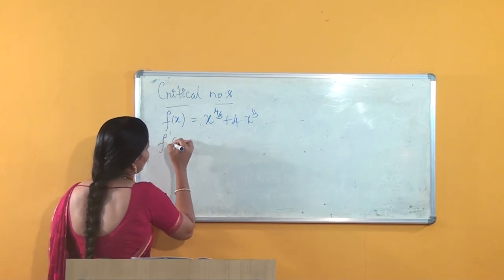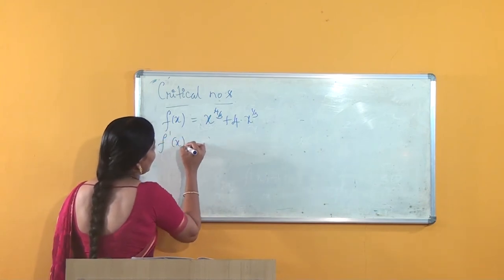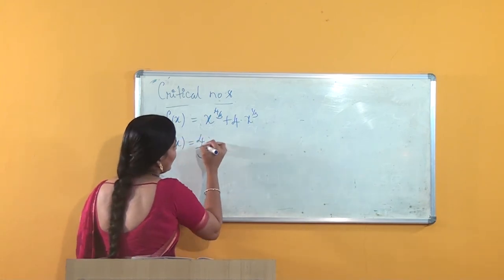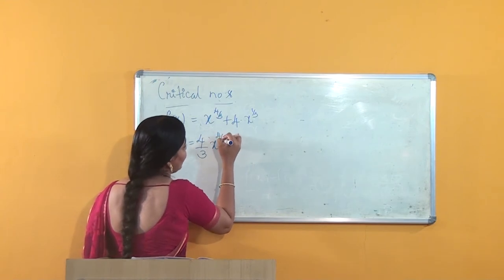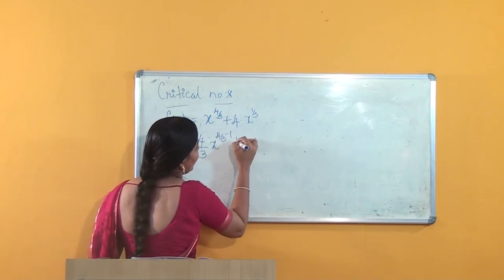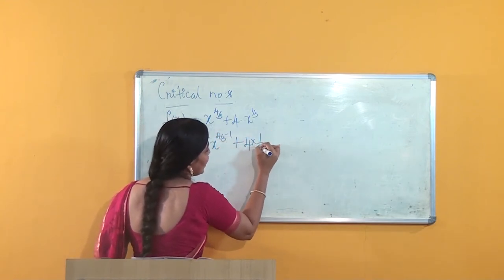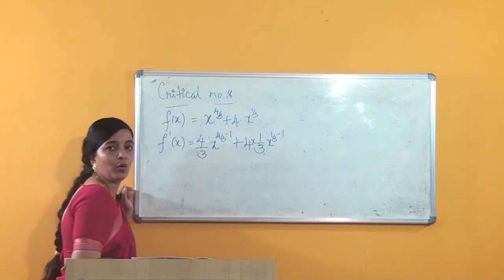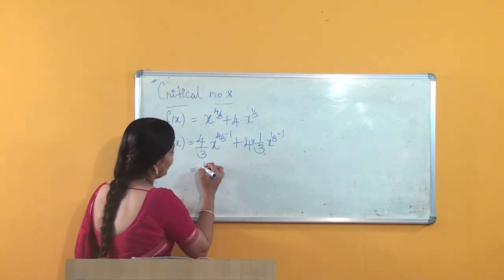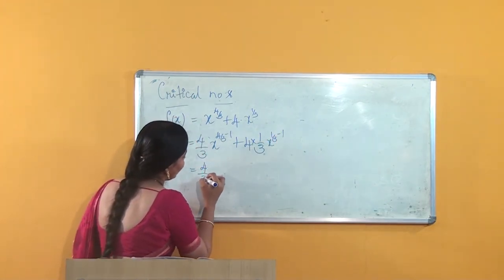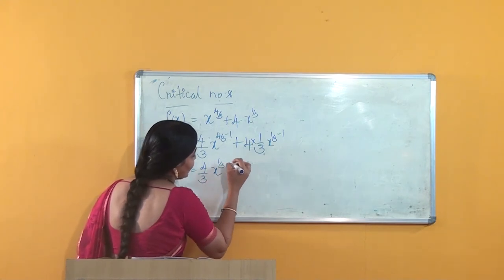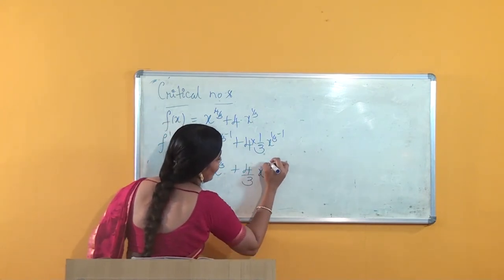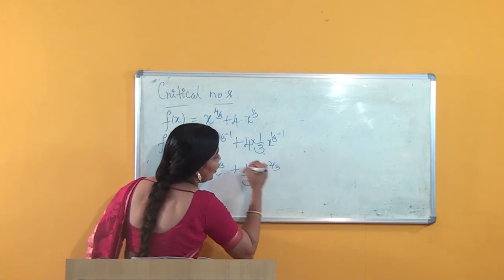f'(x) is nothing but (4/3)·x^(4/3 − 1) + 4·(1/3)·x^(1/3 − 1). When we simplify, we get (4/3)·x^(1/3) + (4/3)·x^(−2/3).